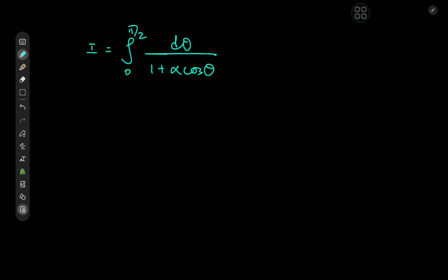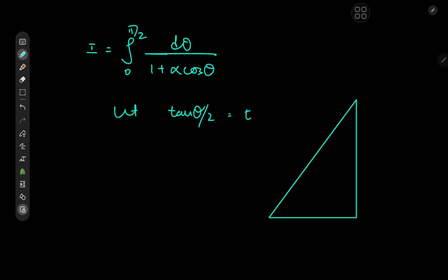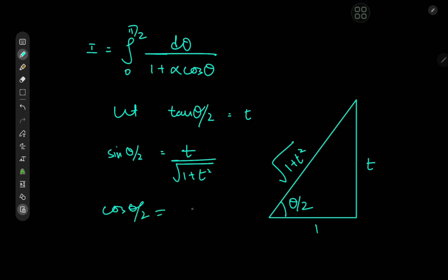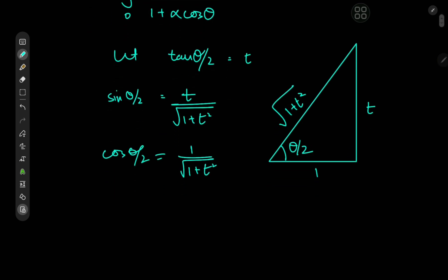First, we'll solve it analytically. Notice what we have: the integral from 0 to π/2 of dθ divided by 1 plus α times cosine θ. The obvious route to solving it would be using the Weierstrass substitution, for which we'll let tan(θ/2) = t. That implies a bunch of stuff, which I'll demonstrate with a right angle triangle. The acute angle is θ/2, t is the perpendicular, 1 is the base, and the hypotenuse is √(1 + t²). So sin(θ/2) = t/√(1+t²), cos(θ/2) = 1/√(1+t²). Using the double angle formula, cos θ = (1 − t²)/(1 + t²).